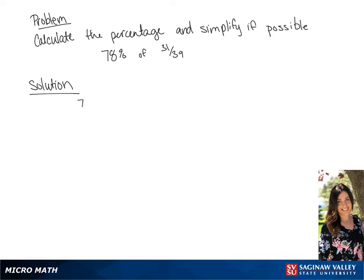We're calculating 78% of 31 over 39. So we have 78 over 100 times 31 over 39. We can simplify the 78 over 100, giving us 39 over 50 times 31 over 39.